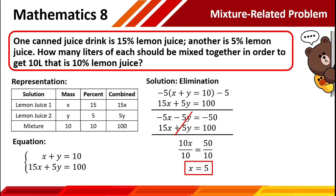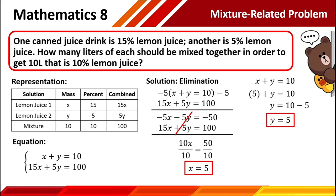Now, to get the value of y, we can use either equation number 1 or equation number 2. I will be using equation number 1. Just substitute the value of x into our equation, so we have 5 plus y is equal to 10. Using the addition property of equality, we transfer 5 to the other side. Therefore, y is equal to 10 minus 5, which simplifies to 5. Therefore, the value of y is 5.